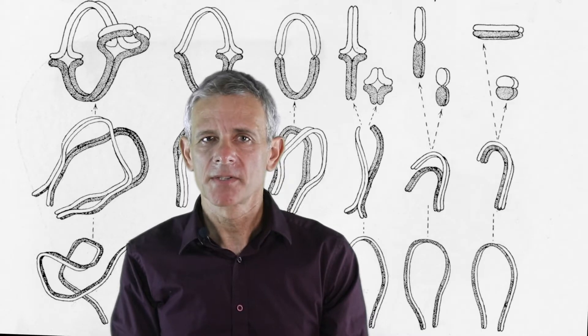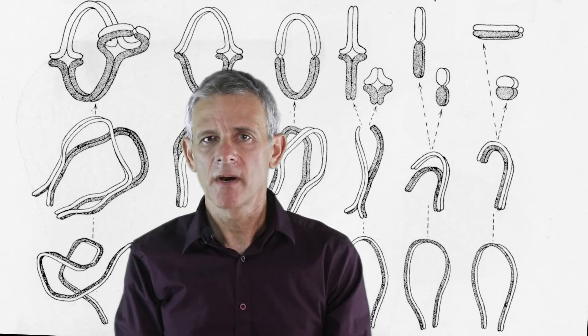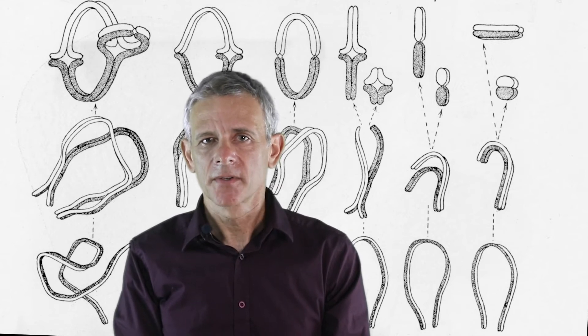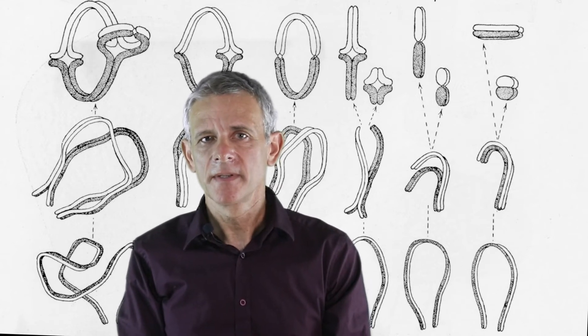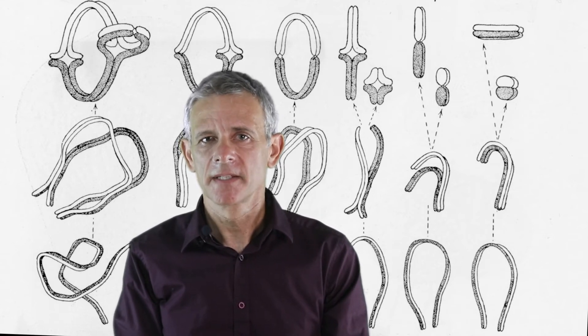If this random segregation would have been the only cause of difference, the daughter cells of meiosis I would have indeed been different. However their daughters, the products of the second division, would have been identical. The fact that all four cells are different from each other is due to an additional process, called crossing over.